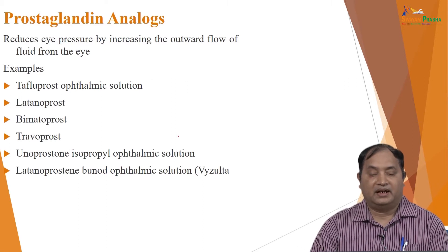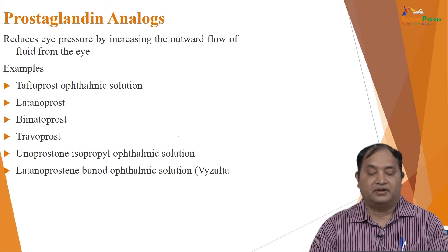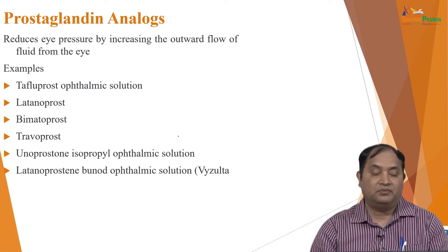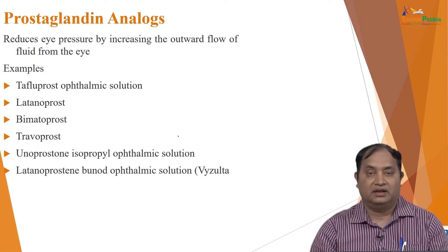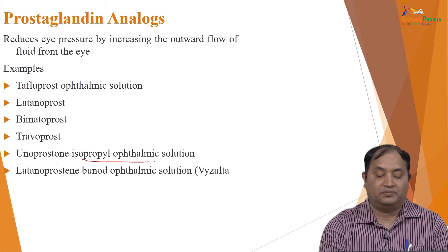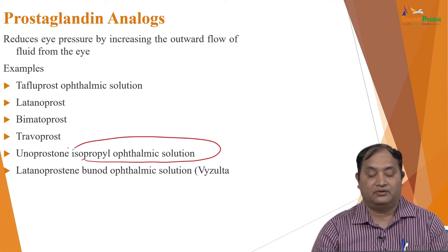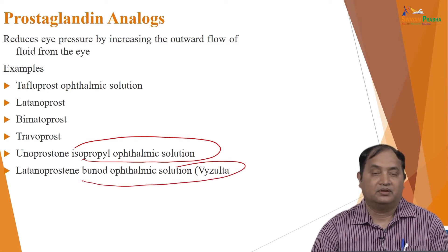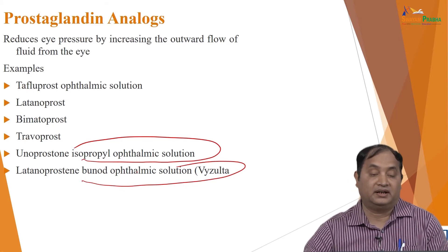Another group of drugs is prostaglandin analogues. They reduce intraocular eye pressure by increasing outflow of fluid from the eye. Examples include travoprost ophthalmic solution, latanoprost, bimatoprost, and travoprost. There are many examples of prostaglandin analogues, some available as ophthalmic solutions such as isopropyl unoprostone ophthalmic solution or latanoprost ophthalmic solution.